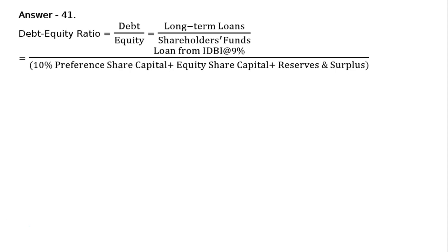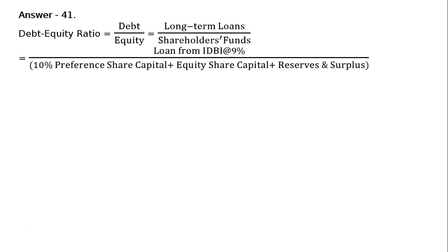Very important point. The values are: Rs. 30 lakhs upon Rs. 5 lakhs plus Rs. 15 lakhs plus Rs. 4 lakhs. That is equal to Rs. 30 lakhs upon Rs. 24 lakhs. That is equal to 1.25 is to 1.